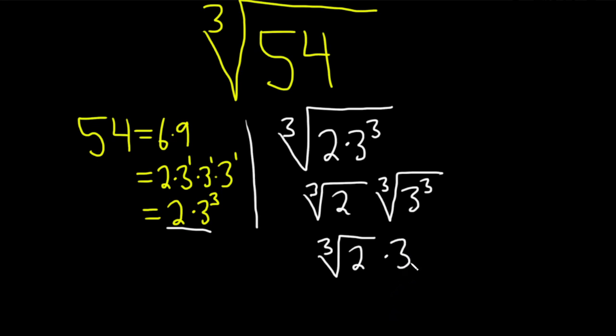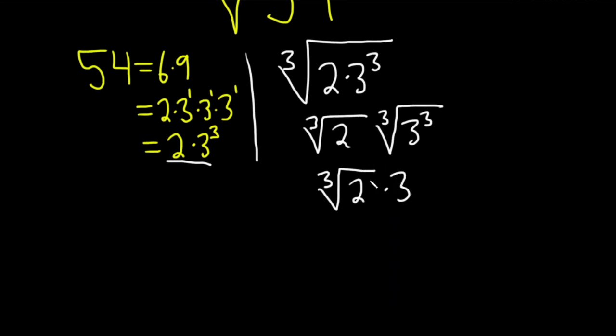And as a general rule, you'll want to put the number in the front because there can be confusion. People might think that the 3 is inside the root. So you want to put this in the front.